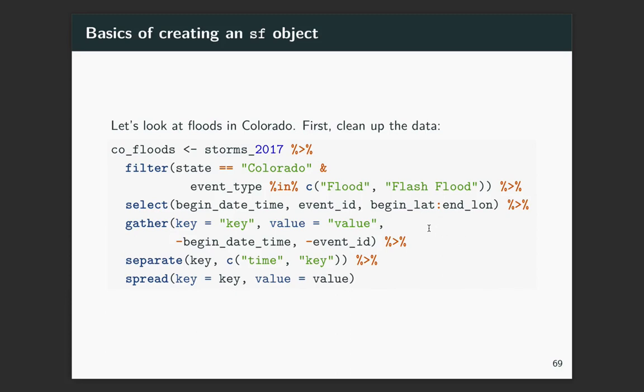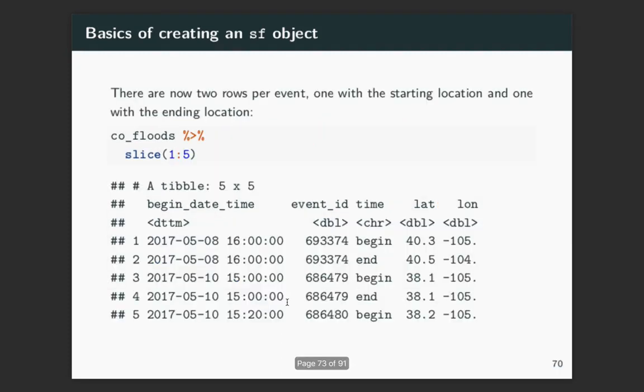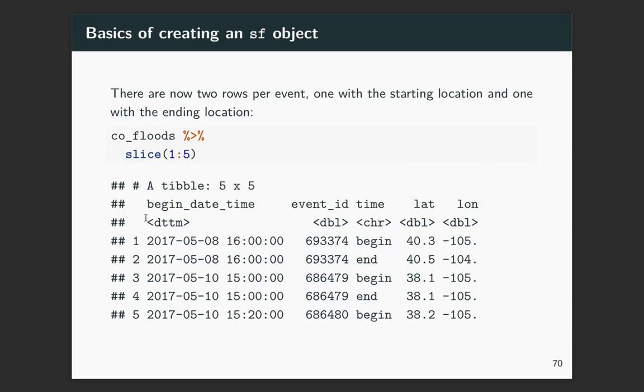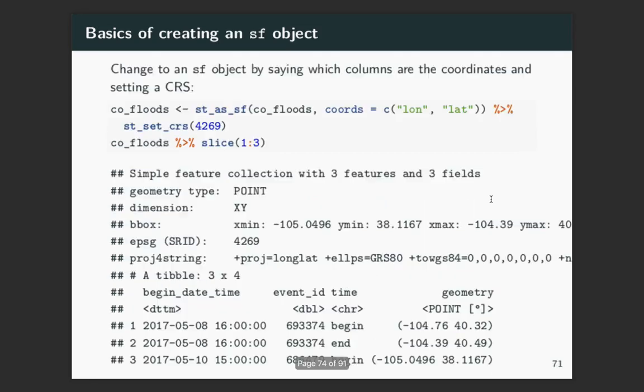Next, I'm taking this from wider data into longer data. In this case, I'm still using the older deprecated gather, but you could change this to do pivot longer to be more current. Then I'm separating the information on the time and the key, some of the original information that we get when we pull this together and then spreading it back out. So once we do that, the data looks like this. We've got the beginning date time, an event ID, and you can see that each of these, we have two rows for each event ID. One is for the beginning time, and one is for the end time. And then for each of those time points, we've got latitude and longitude. So in this case, these two columns are the columns with our geographic information. So those are the ones we want to specify when we change this to SF.